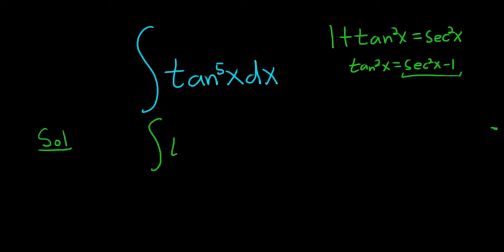So let's write this as tangent cubed of x times the tangent squared of x dx. We can do that because we're basically multiplying. And when you multiply you add the exponents, right? 3 plus 2 is 5. Now let's use the identity on this second piece here and see what happens.